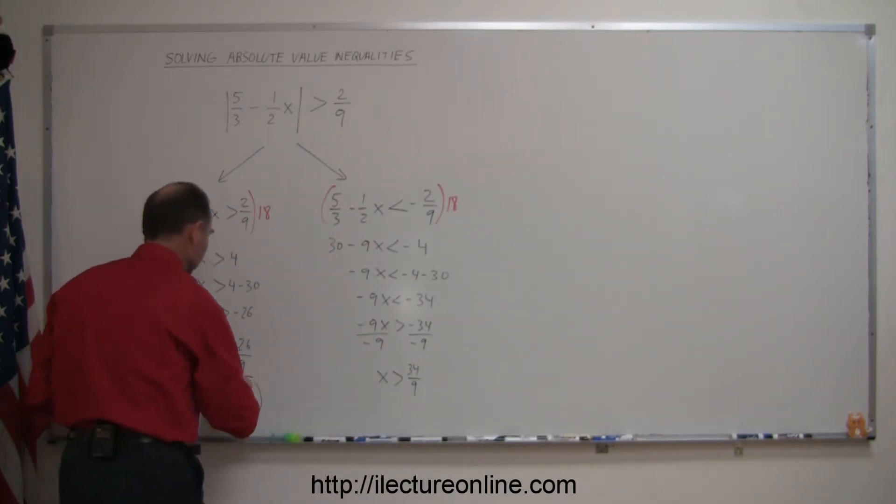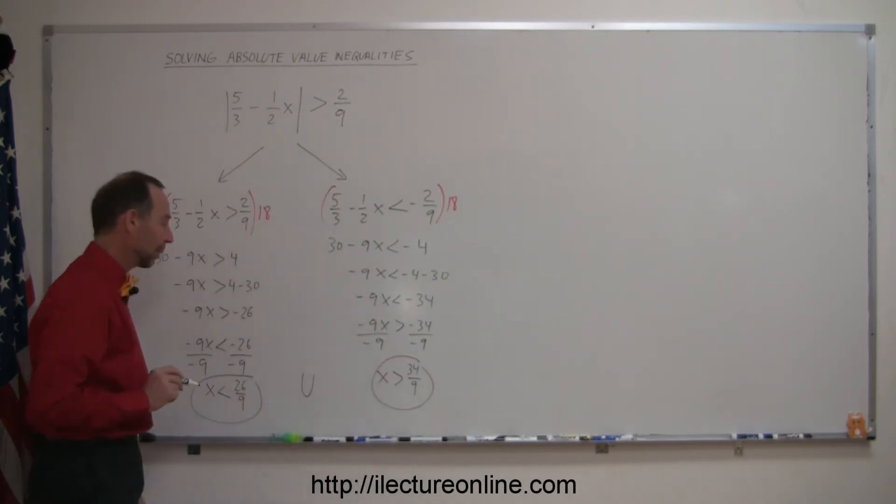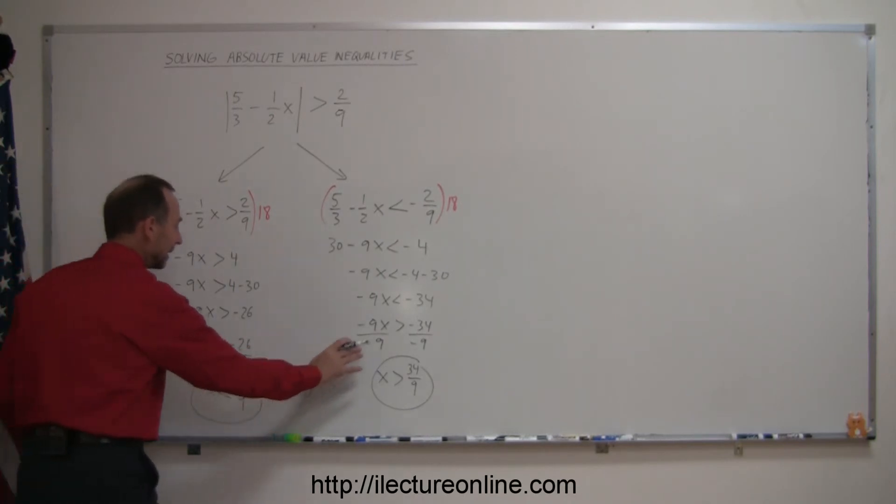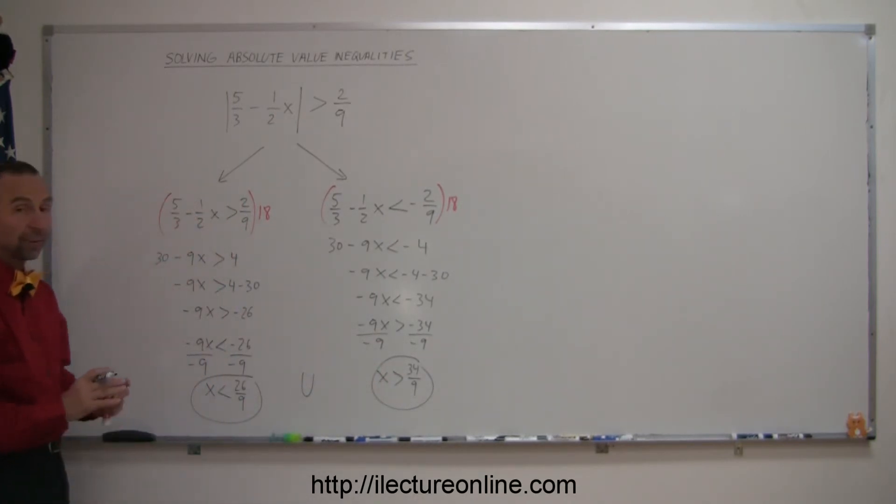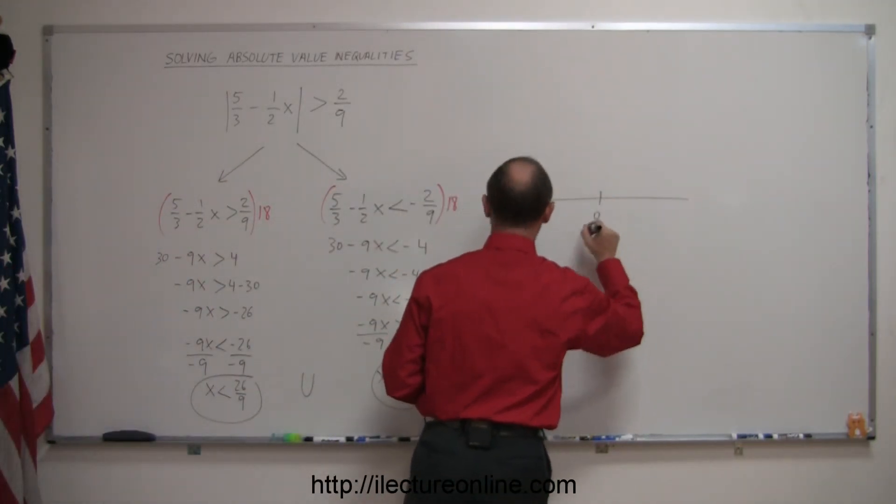And so those are the two solutions, or the two portions of solutions. Both of them are correct, so we write the union symbol to indicate that it's this and that being the total solution. So if we illustrate that on a number line, there we go, here's the number 0.